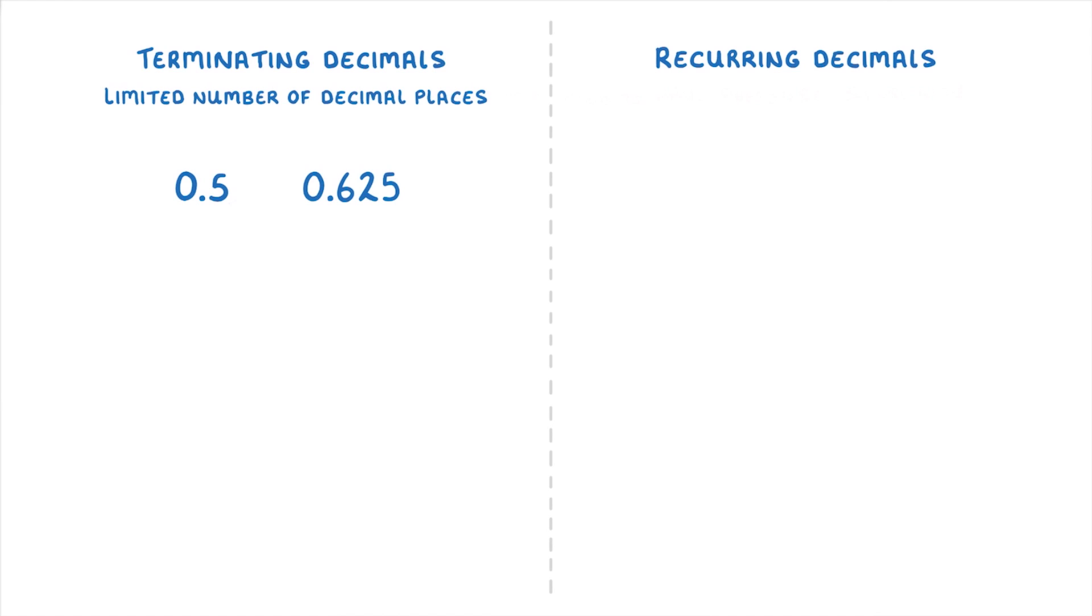In contrast, recurring decimals continue indefinitely, like 0.66666 going on forever. We obviously don't want to write out an infinite number of sixes, though, so instead you can put a dot above the digit that recurs. For this one, you could just write out 0.6 and then put a little dot just here above the 6 to show that it's the 6 which is recurring.